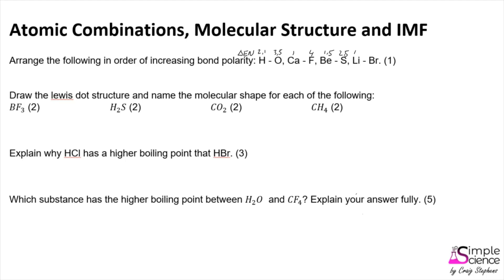Once we have those electronegativities, we can calculate the difference in electronegativity for each bond. The bond between hydrogen and oxygen has a difference of 1.4, calcium and fluorine has a difference of 3.0, beryllium and sulfur has a difference of 1.0, and lithium and bromine has a difference of 1.8.